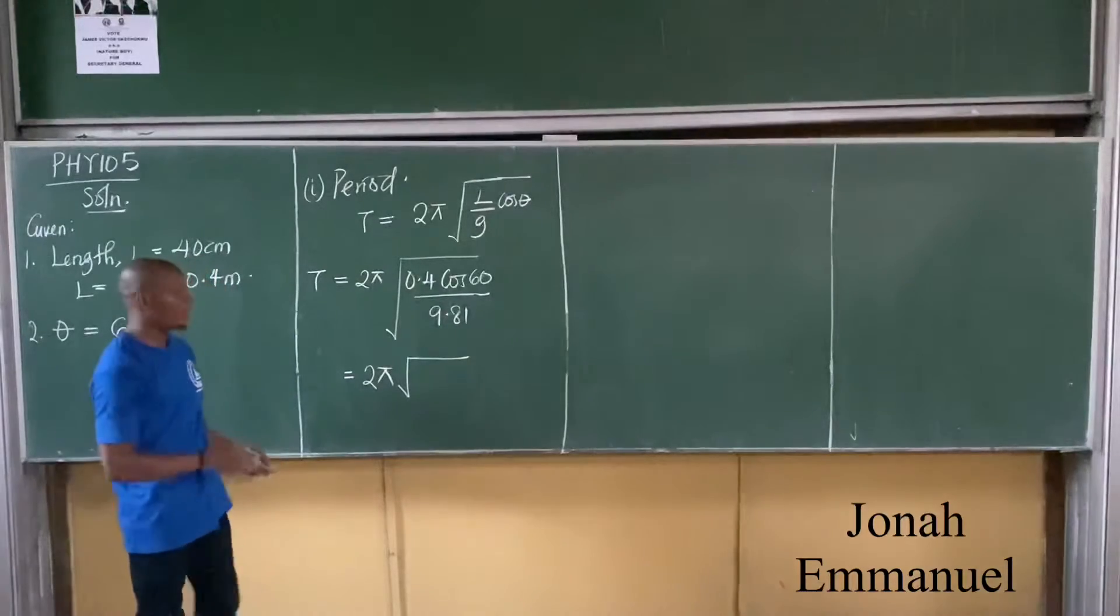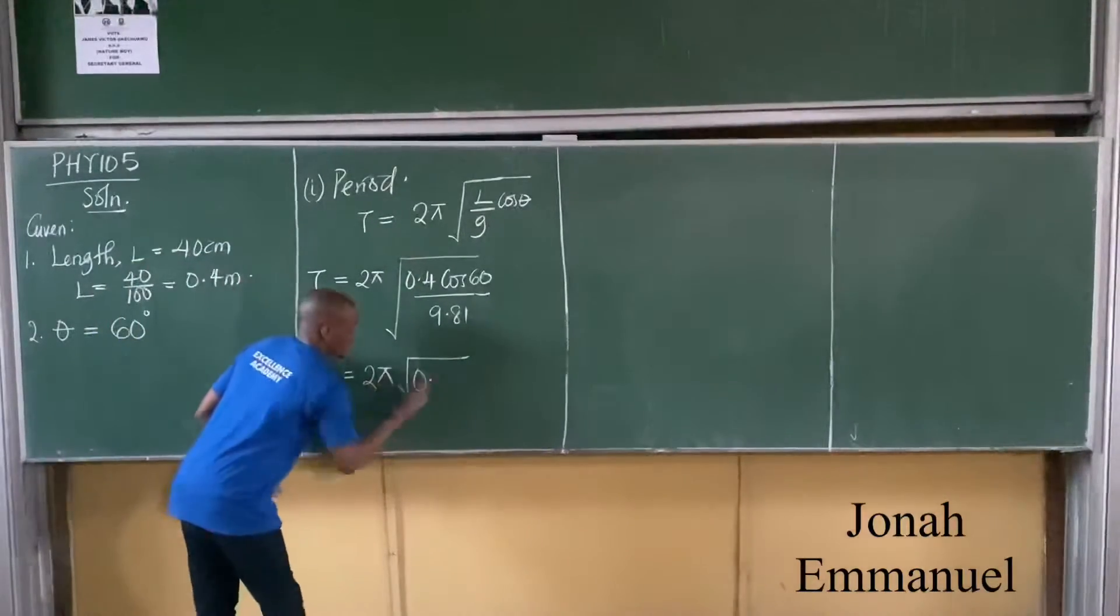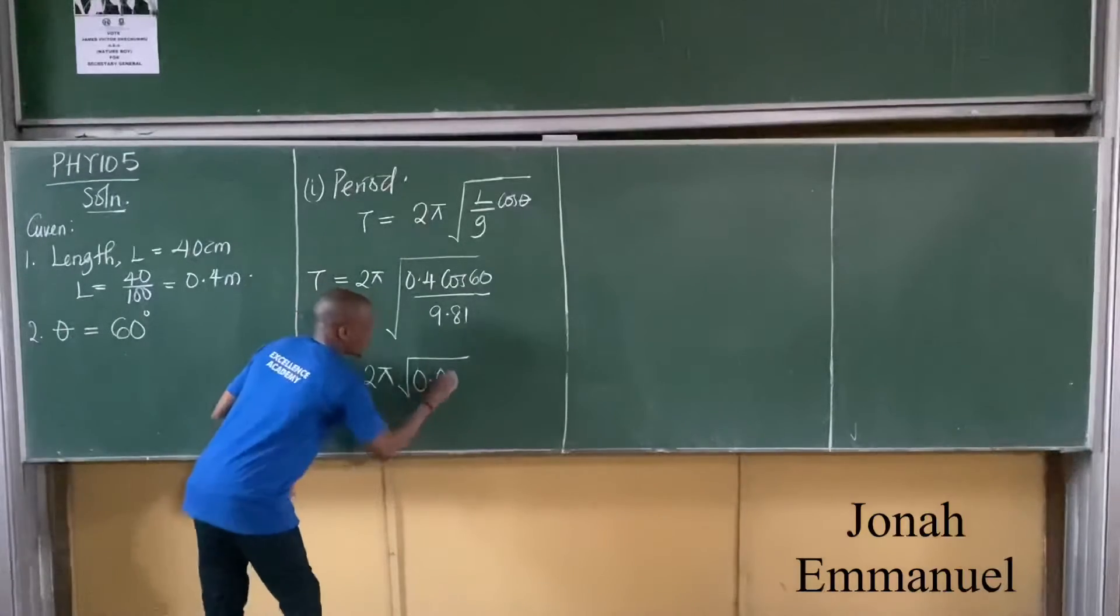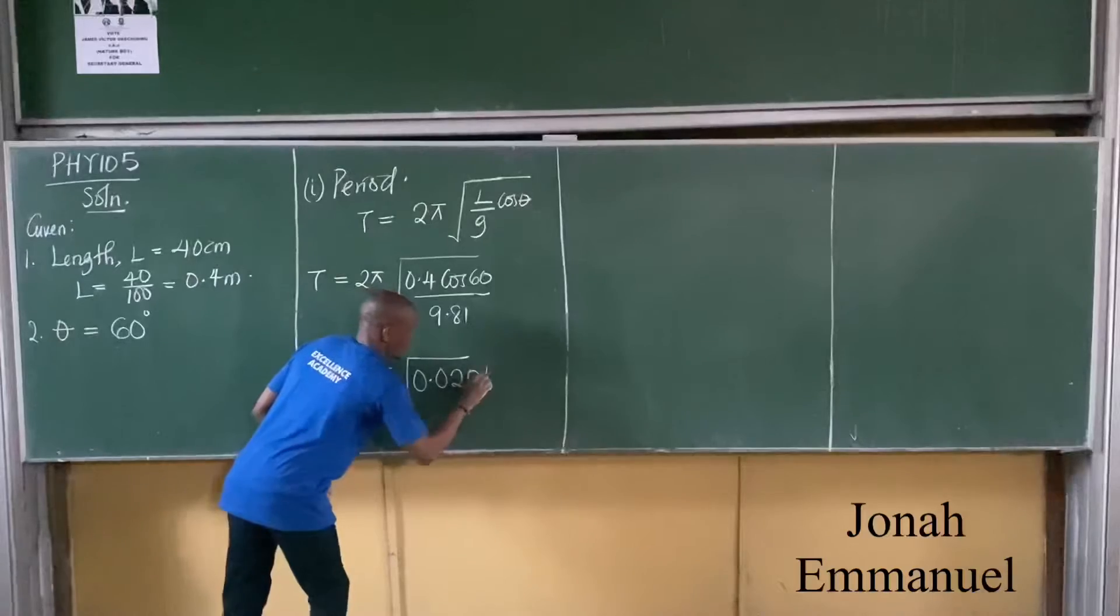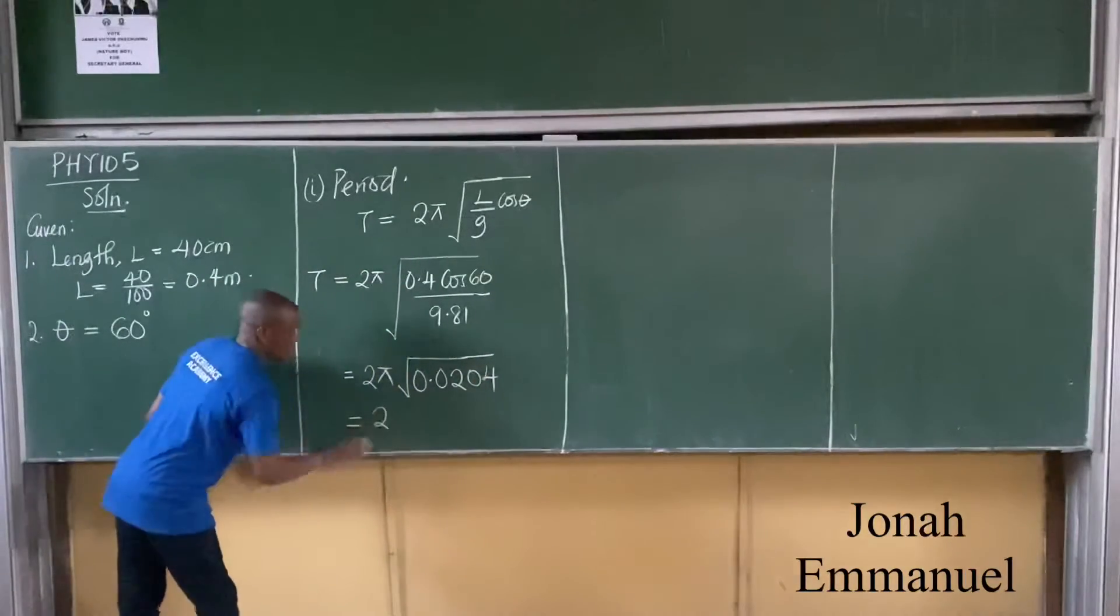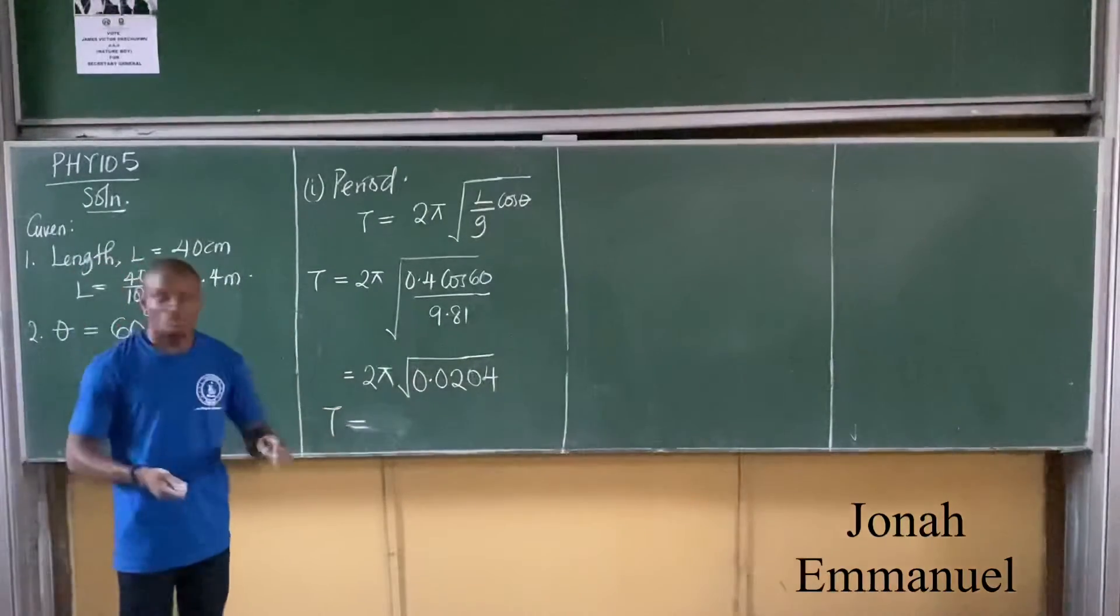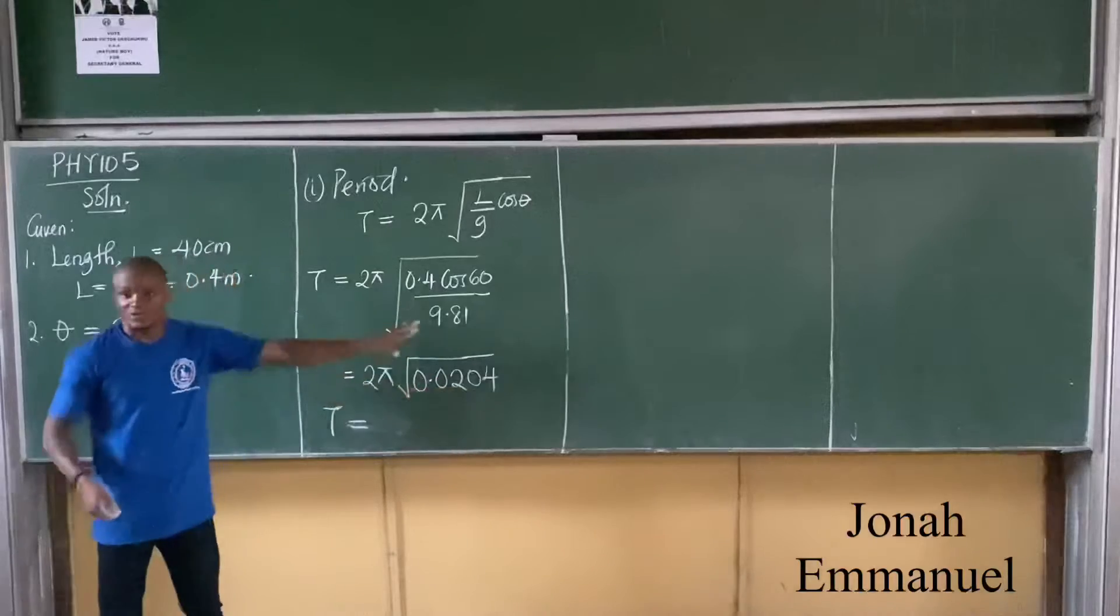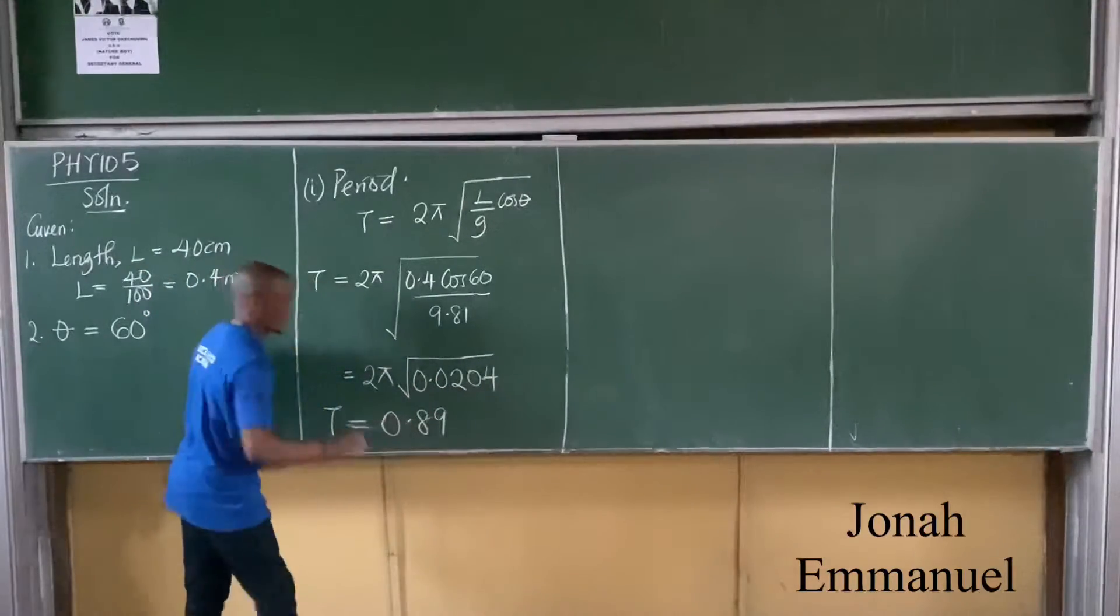So it's now equal to 2π square root of 0.4 cos 60 over 9.8. That's equal to 2π times this. Just punch all of this. What do you get? 0.897.